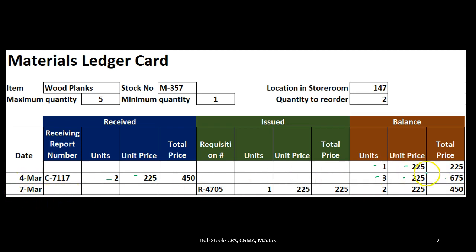On March 7th we had an issuance. Work in process requested one plank of wood for a new guitar project, and we have a requisition form — the form from the factory saying they have a project to work on. That's one unit at $225. Note this isn't the sales price; it's all internal, going from one department to another, now to work in process. After issuing one unit from the warehouse, two units remain at $225 each, giving us a balance of $450.